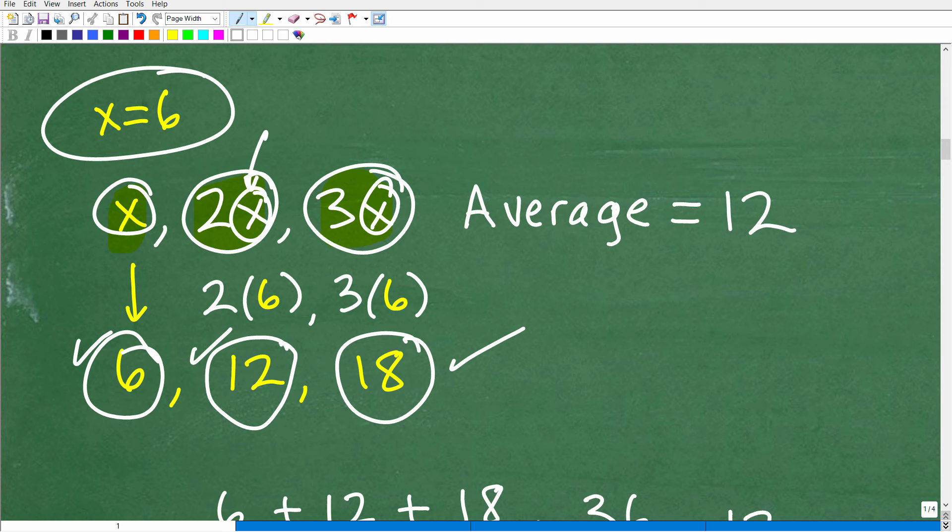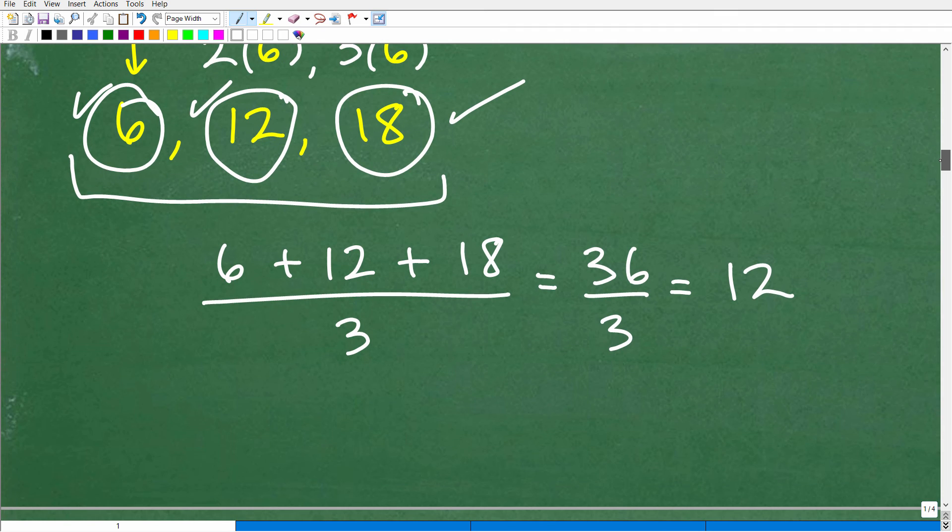But let's just make sure that when I take the average of these three numbers, it is equal to 12. We can always check our work in mathematics. That's what makes it so cool. So let's go ahead and do this real quick. 6 plus 12 plus 18. We have three numbers: 1, 2, 3. We'll divide that by 3. 6 plus 12 plus 18 is 36. 36 divided by 3 is, in fact, 12. So this worked out perfectly.